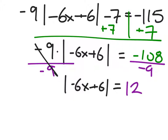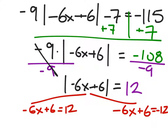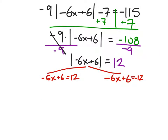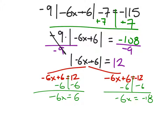Now we have an absolute value that equals a positive 12 — that's fine, and we can continue to solve. We split this into two separate equations where the inside equals positive and negative 12. Subtracting 6 from both sides, then dividing both sides by negative 6, we get x equals negative 1 and x equals 3.